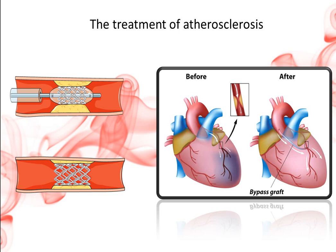In addition, bypass surgery can be used to bypass the occluded artery to keep the blood flow open. A channel is established between the proximal end and the distal end of the coronary artery stenosis, so that blood bypasses the narrow segment to reach the distal end, improving myocardial blood supply.